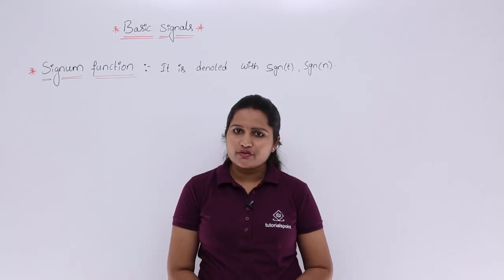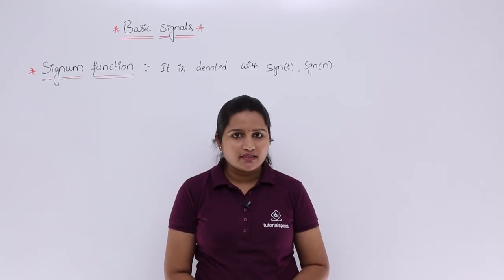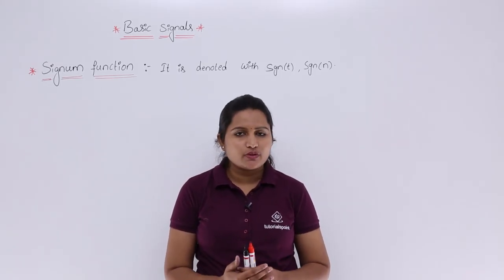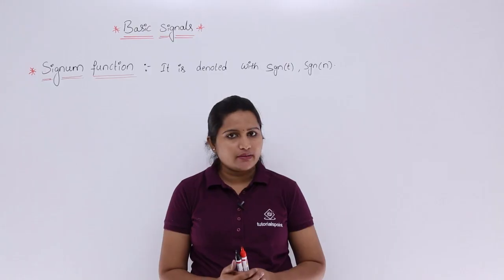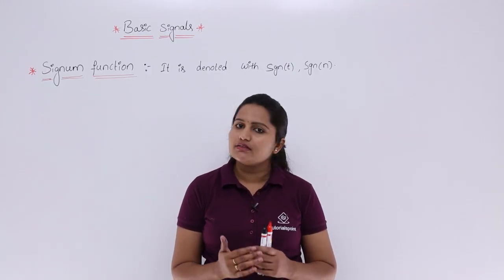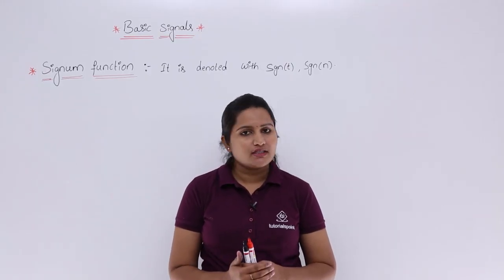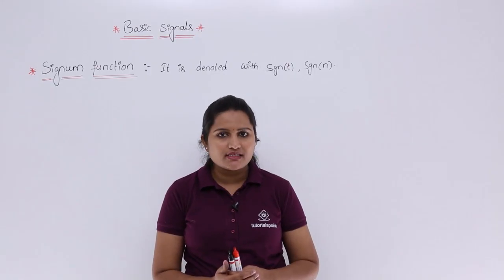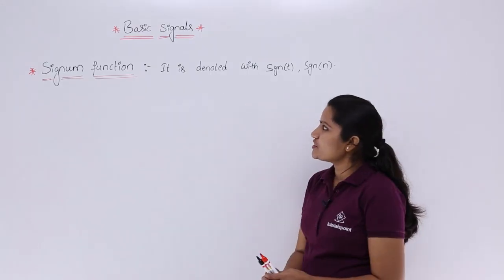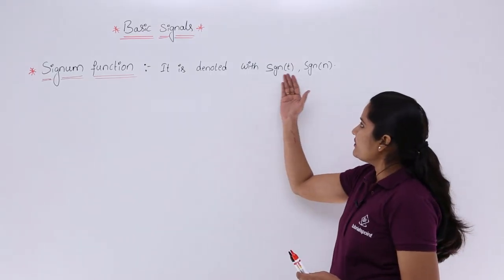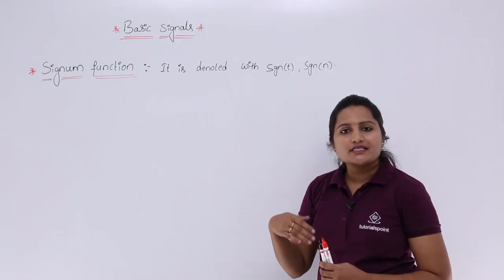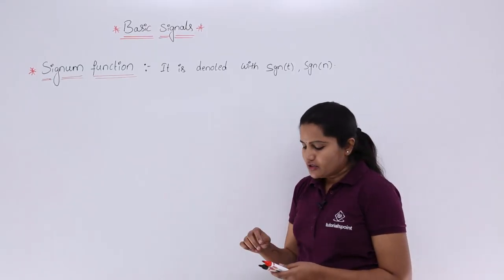In this video we are going to discuss about the signum function. Up to now we discussed unit step function and impulse function. Similar to that, we are having the signum function in the listing of basic signals. The signum function is denoted with sgn(t), or sgn(n) in the discrete sense.